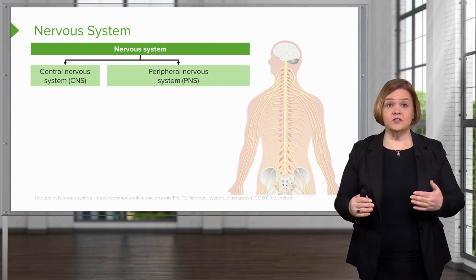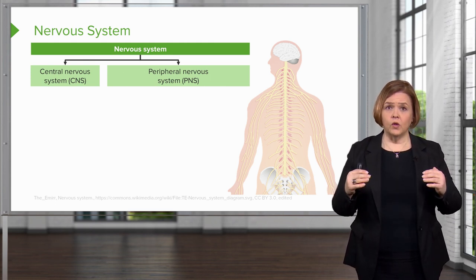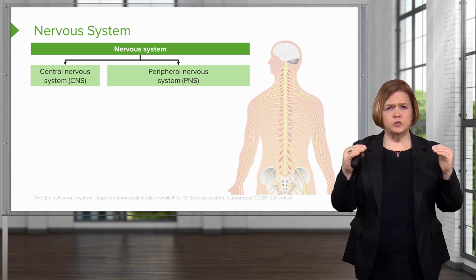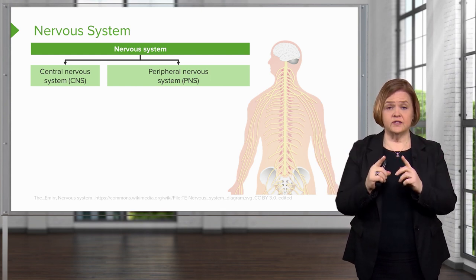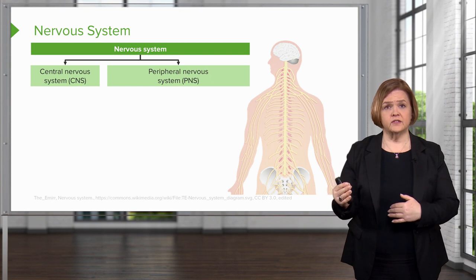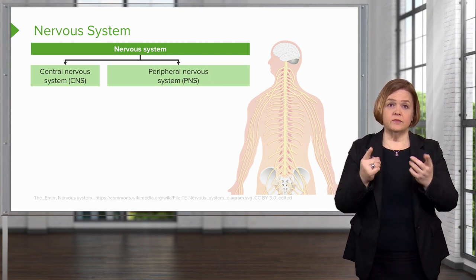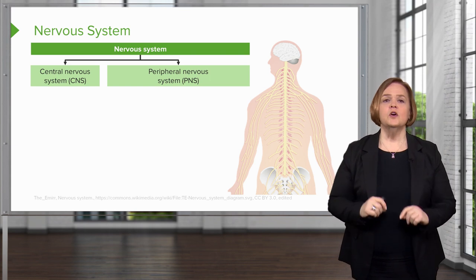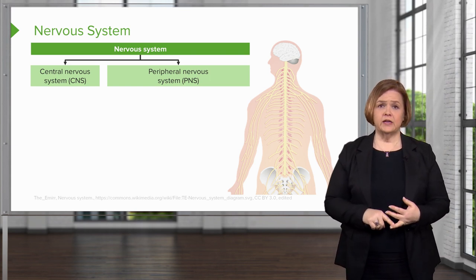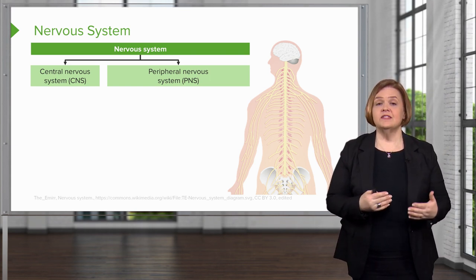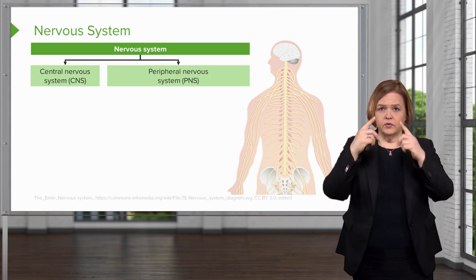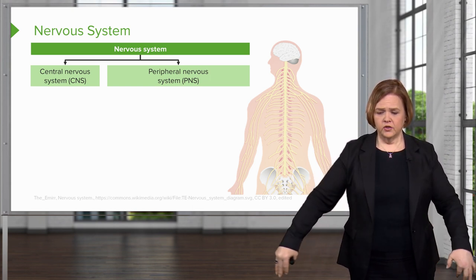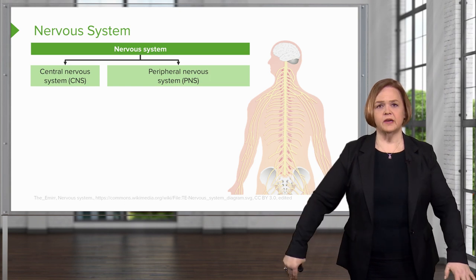Let's back up and start by looking at the nervous system as a whole. We've got the nervous system and it breaks into two parts: the central nervous system and the peripheral nervous system. The central nervous system goes right down the center of your body — we're talking about the brain and spinal cord. The peripheral nervous system comes off that spinal cord and goes all the way out to all the other parts of my body.